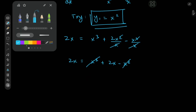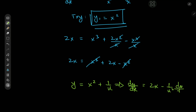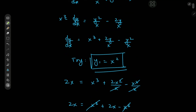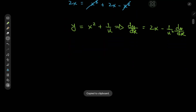The general solution will be y = x² + 1/u, where u is a function of x. Since our equation has a first derivative, we differentiate this with respect to x, giving dy/dx = 2x − (1/u²)(du/dx).